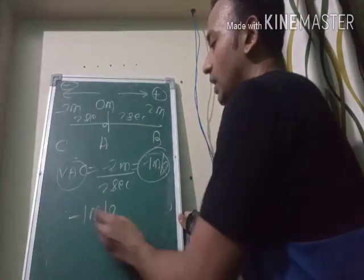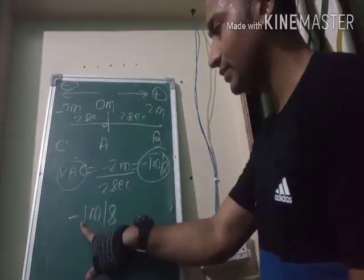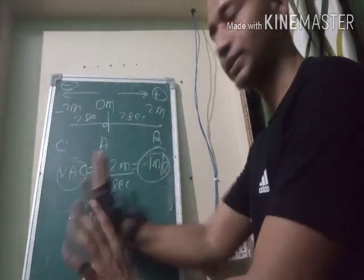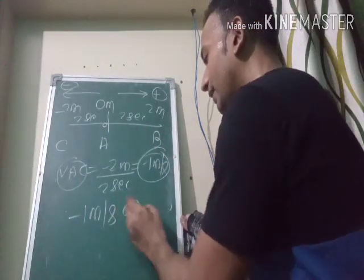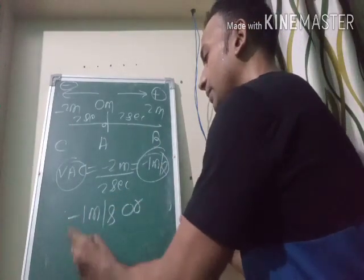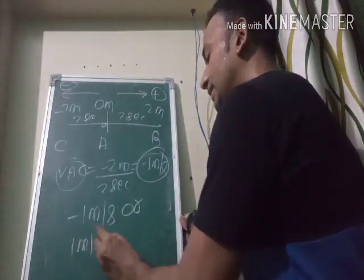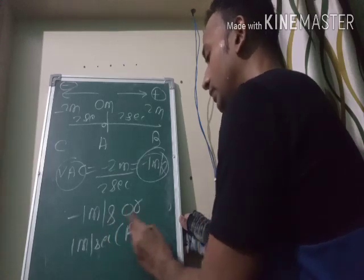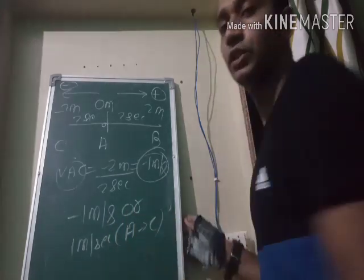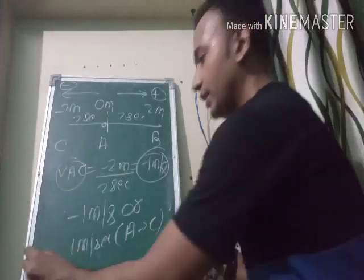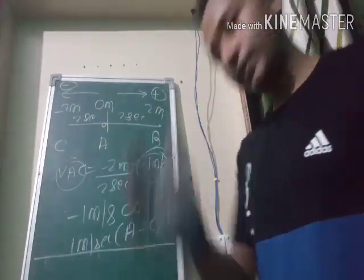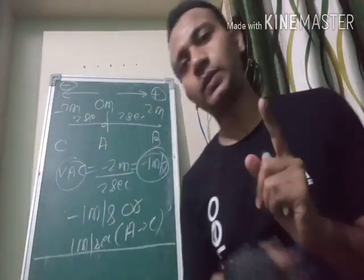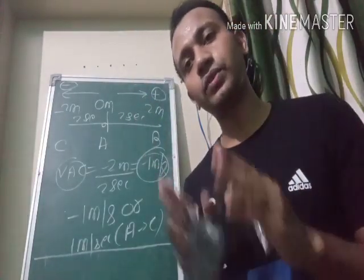So velocity is an example of a vector quantity, and displacement is another example — both depend on magnitude and direction. You can express minus one meter per second in two ways: either write minus one meter per second, or write one meter per second from A to C — both convey the same information.